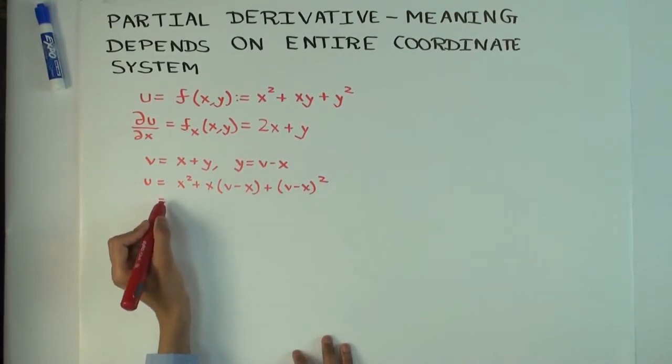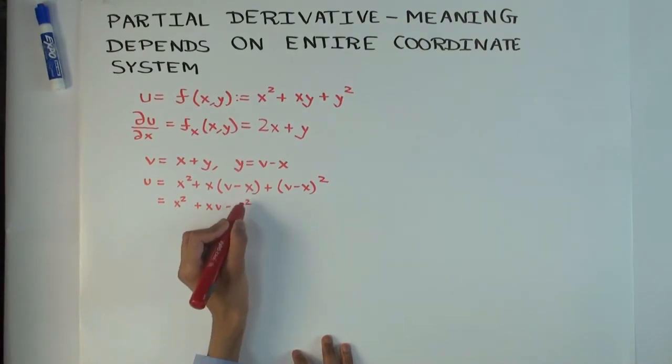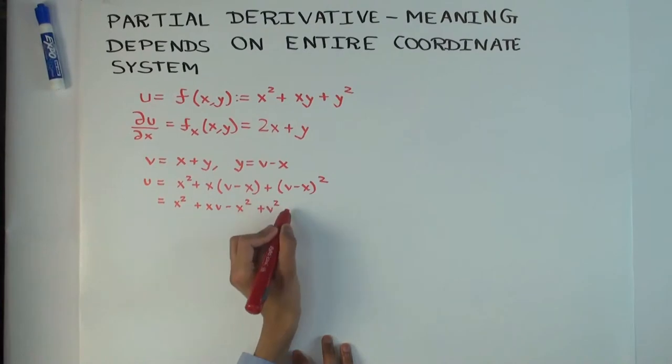So let's simplify this. x squared plus xv minus x squared plus v squared minus 2xv, well 2v times x, 2xv plus x squared.